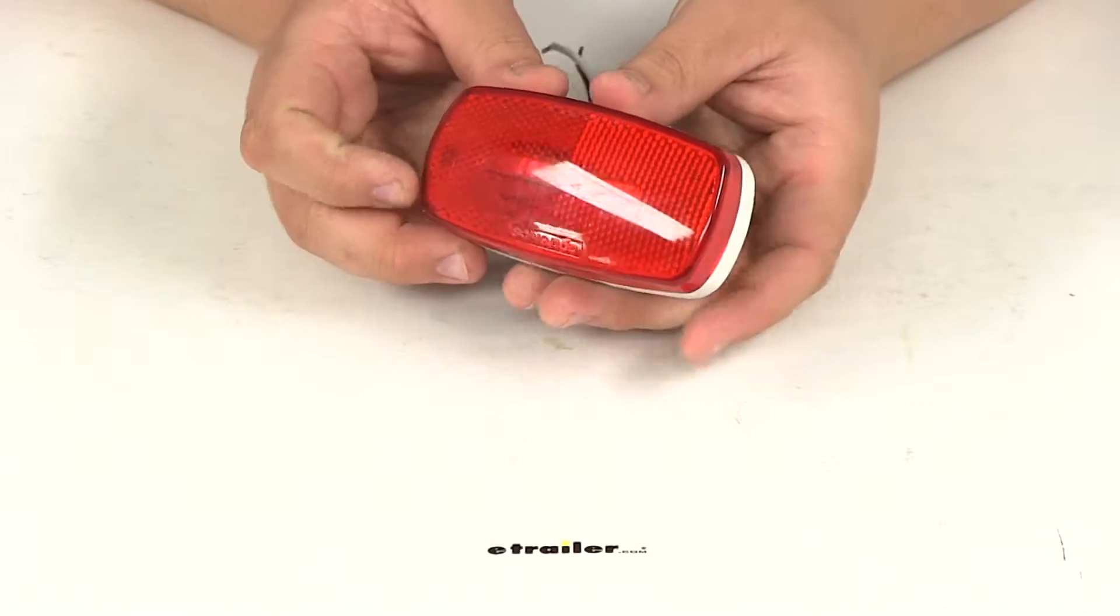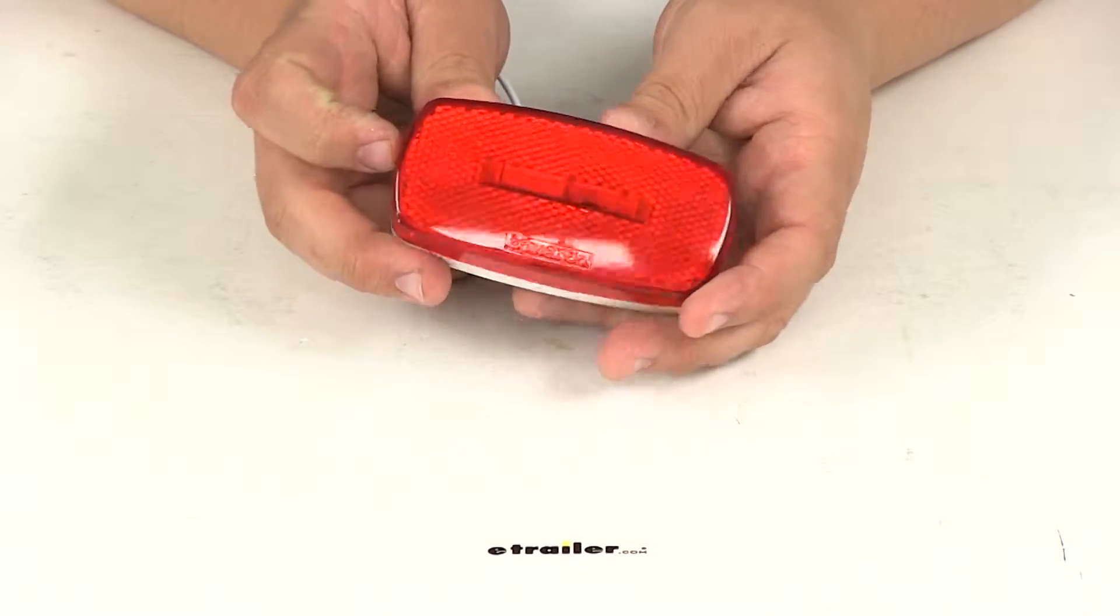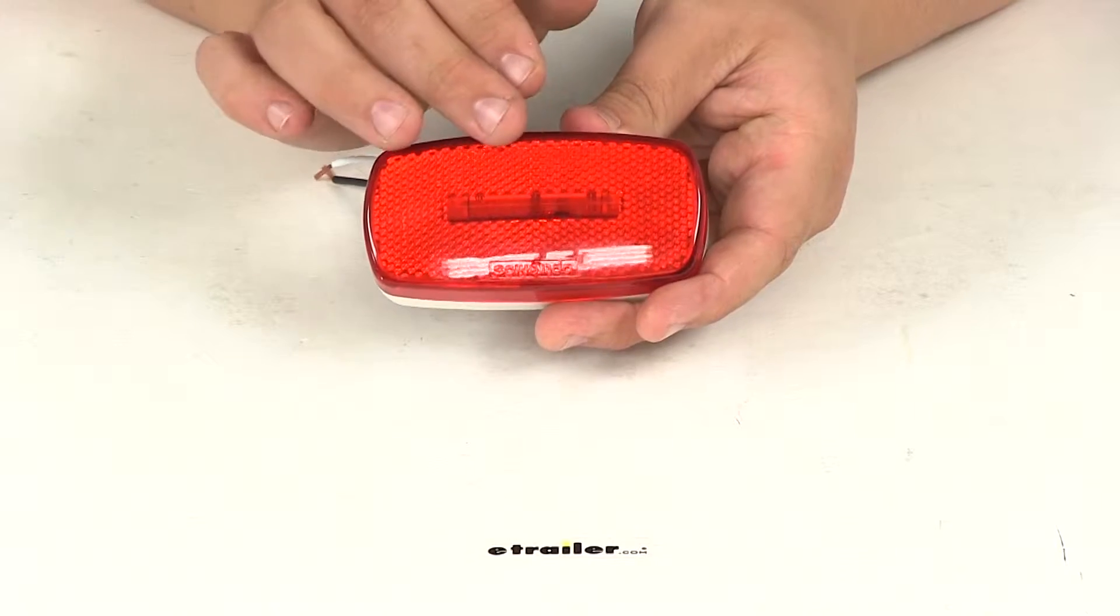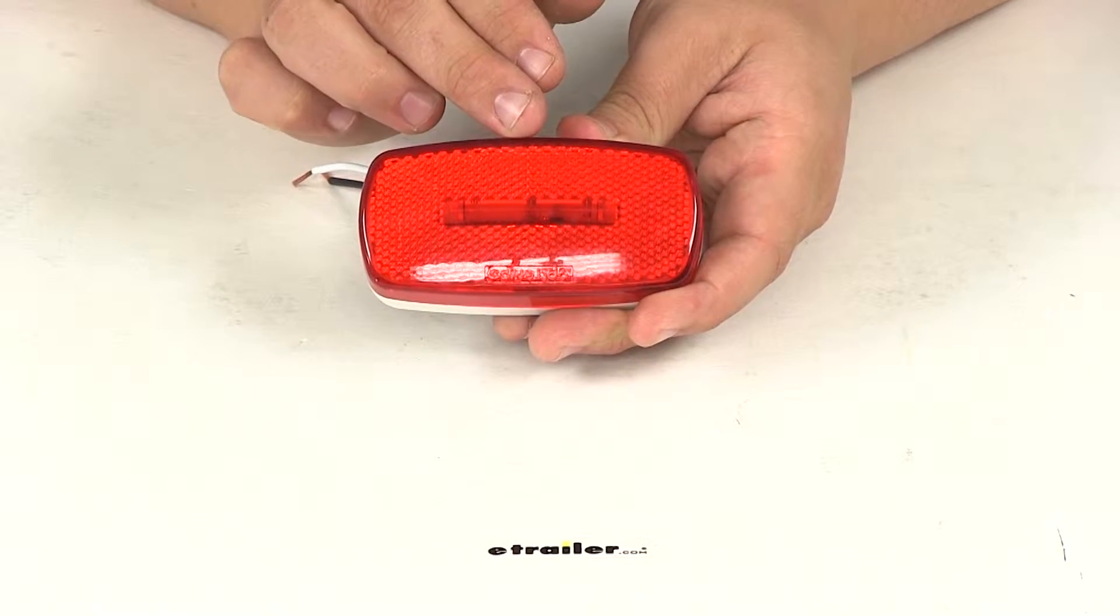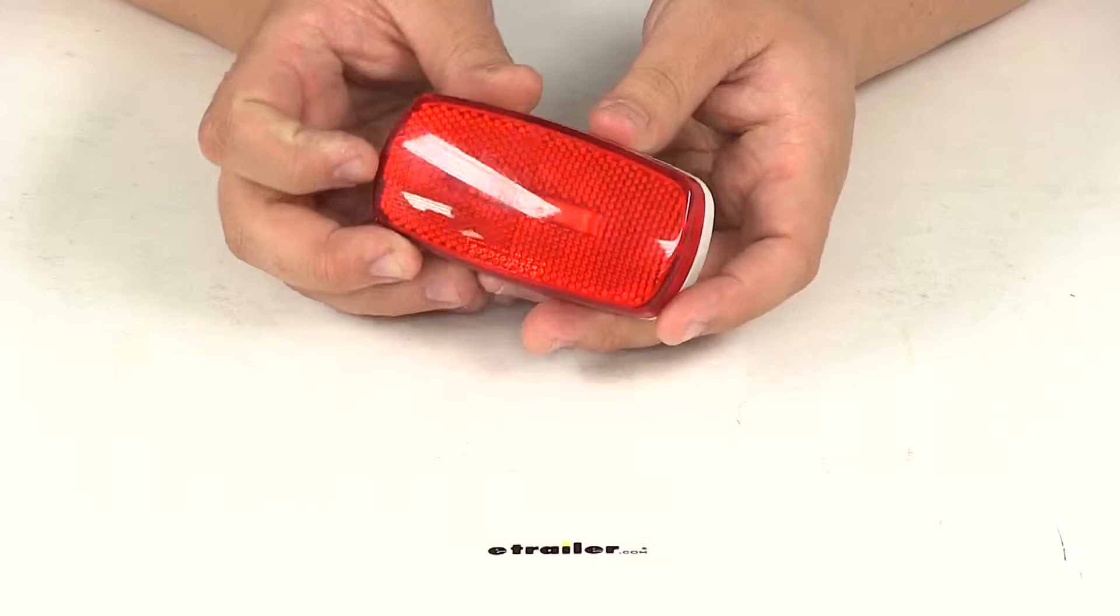The rectangular light is going to function as either a side marker light, clearance light, or identification light. It's going to contain three LEDs, a three diode design which is going to optimize your light output.